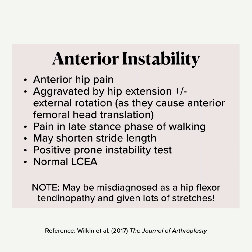There may be positive prone instability tests combining hip extension with external rotation or abduction. Importantly, these cases can have a normal lateral center edge angle, which is why x-ray alone may not be sufficient and CT may be indicated. These cases are often misdiagnosed — someone with anterior hip pain irritated by extension might be labelled as hip flexor tendinopathy and given lots of stretches. Those stretches take them into those less stable hip extension positions, so avoid sending people with suspected anterior instability off to do lots of stretches.